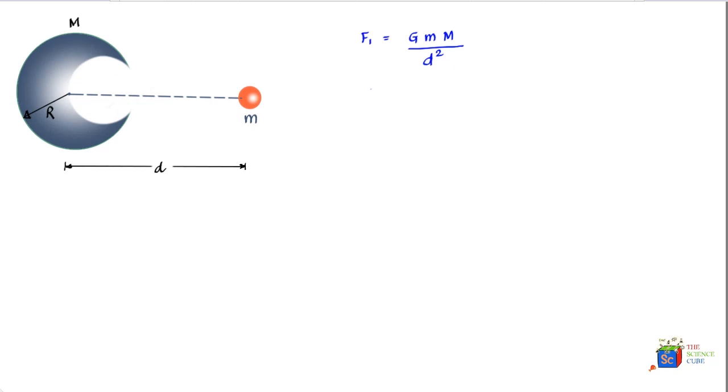So we know that the density of the larger ball would have been mass upon volume, or mass upon four-third of pi R cube, and the density of the smaller ball would have been same and equal to, let us say its mass is M dash, that is the ball that has been extracted, divided by 4 by 3 into pi, and here the radius of this ball would actually be R by 2, and we will cube it.